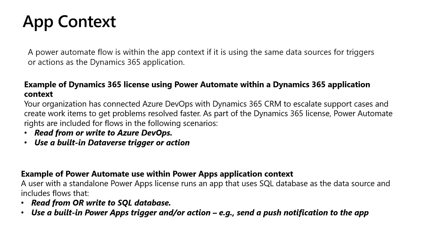Let's look at an example. Your organization has connected Azure DevOps with your Dynamics 365 application. If you change the status of a case to 'escalated' in your app and it triggers a flow that creates a work item in Azure DevOps, then this flow is within the app context. The same definition applies to Power Apps — the only difference is a canvas app can have different data sources such as SQL database, SharePoint, or Dataverse. If a Power App is using SQL database as a data source, the flow will be in app context if it is reading or writing data to SQL database or using built-in Power App triggers or actions, for example sending a push notification to the app.